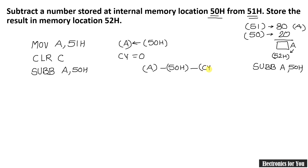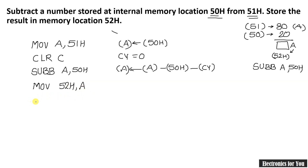The result is now in the accumulator after execution of this instruction. Further, we have to store this result at 52H. Therefore, I will use the instruction MOV. My destination is 52H and my source is the accumulator. So MOV 52H, comma A should be written, and at the end of program, as always, loop SJMP loop — that is the end of the program.